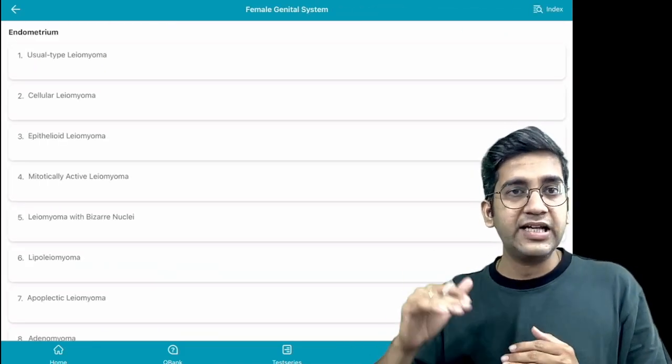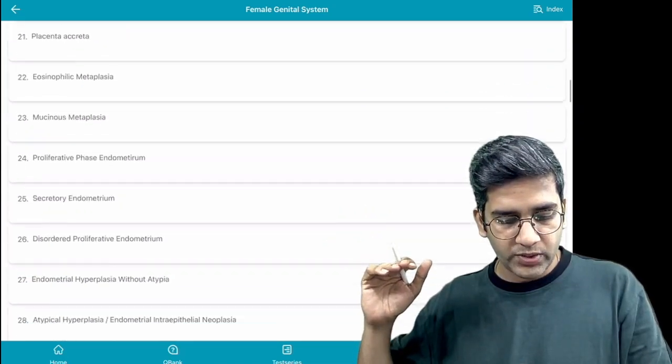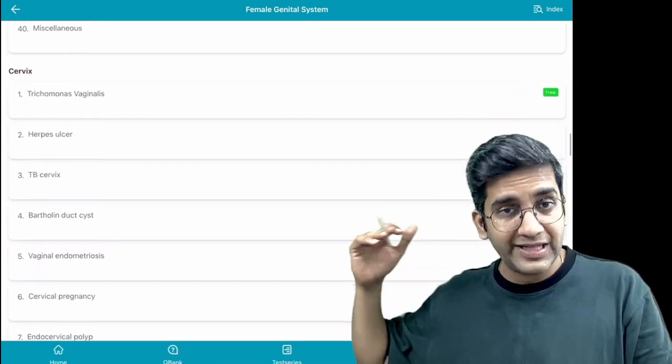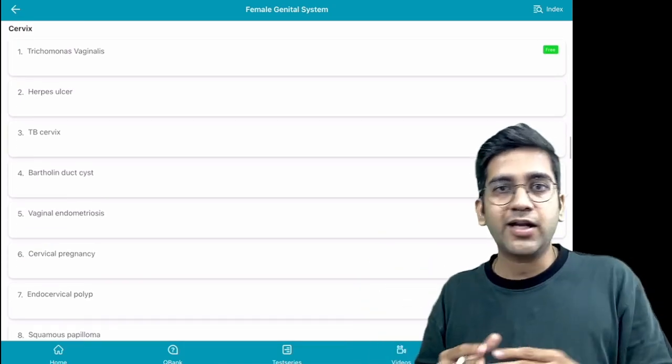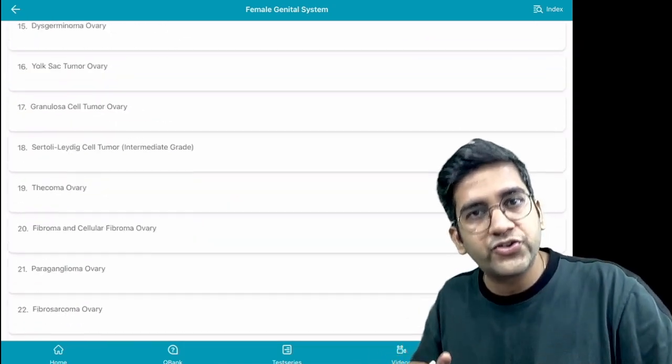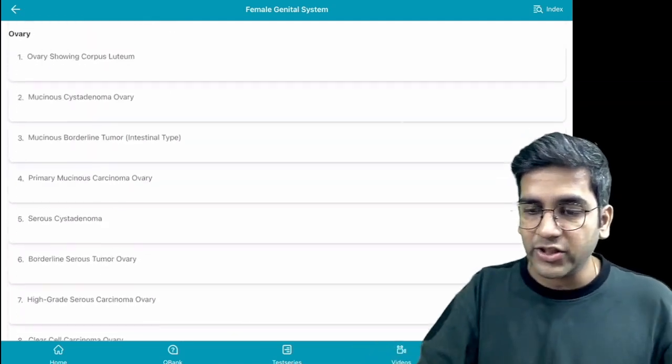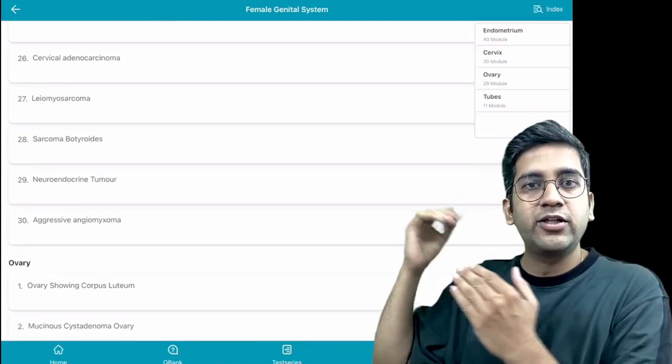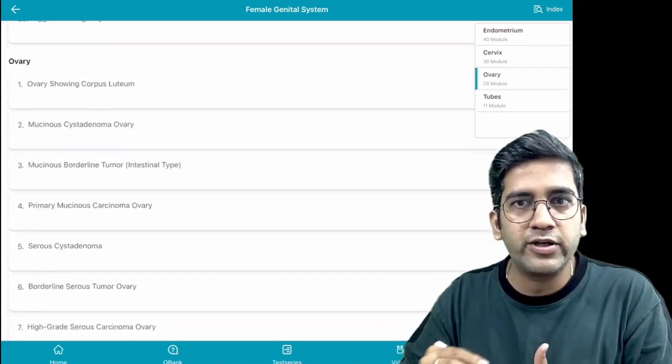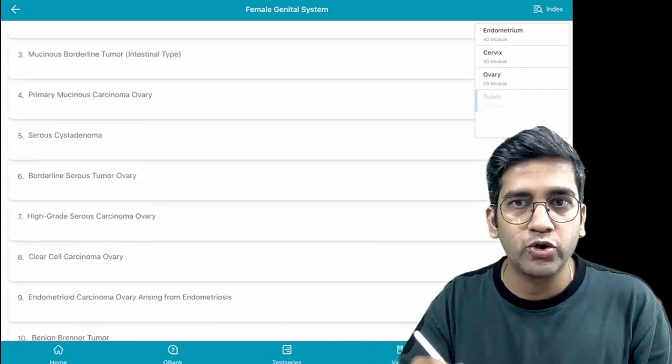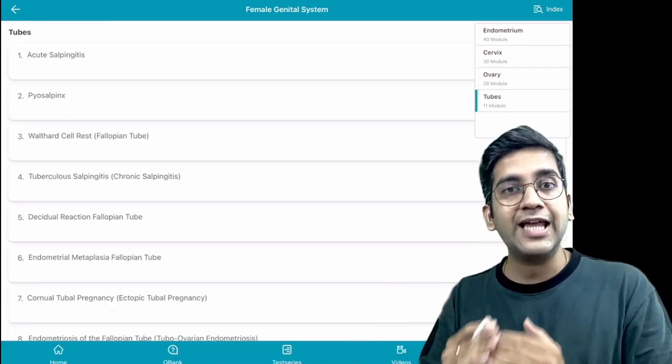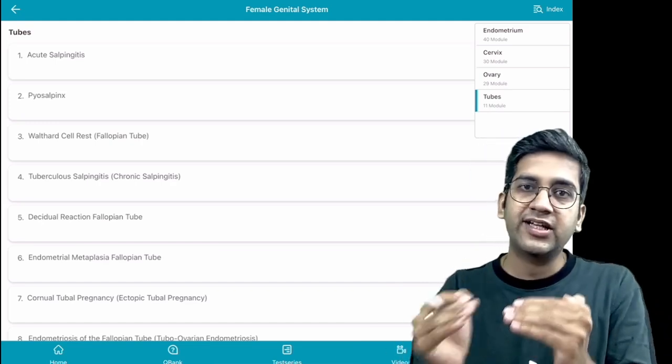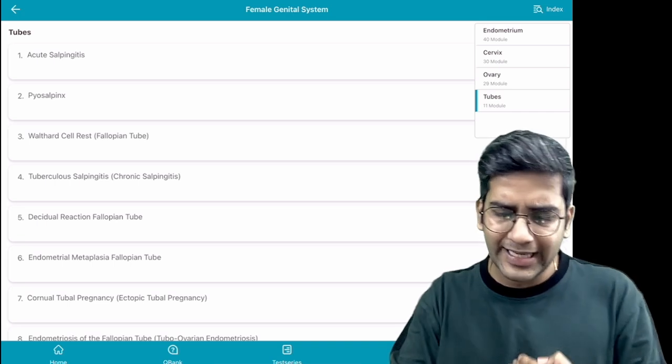Let's click a random thing, FGT. Under FGT, we have endometrium with close to 40 cases, then cervix. You might think, should I keep scrolling to look at everything? No, you can see in the top right corner called Index. You click on Index and can jump directly to ovary module, tubes, or wherever you want.